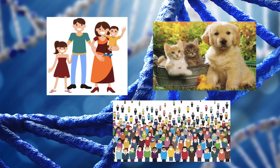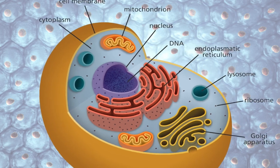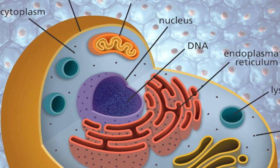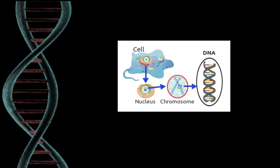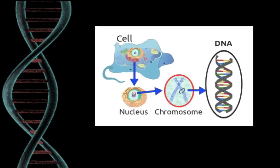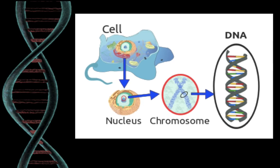Every living thing is made of cells. Most plant and animal cells have a nucleus. The nucleus tells the cell what to do. Inside the nucleus are chromosomes, which are made of long strands of tightly coiled DNA.